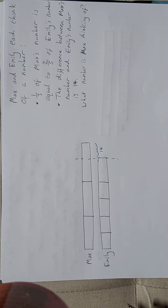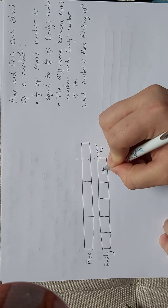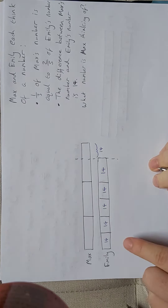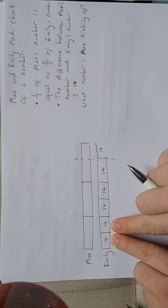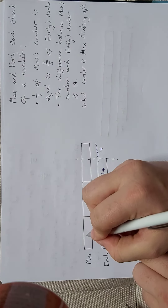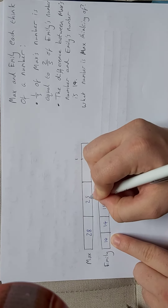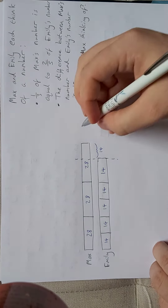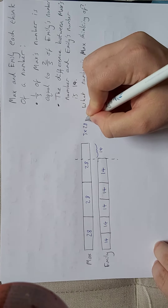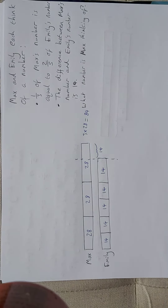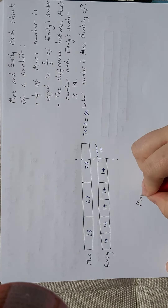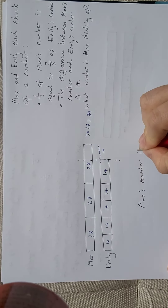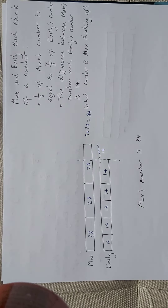That means each of Emily's boxes is worth 14. So two of Emily's boxes — which equal one-third of Max's number — are worth 28. Therefore all of Max's number is 3 times 28, which equals 84. Max's number is 84.